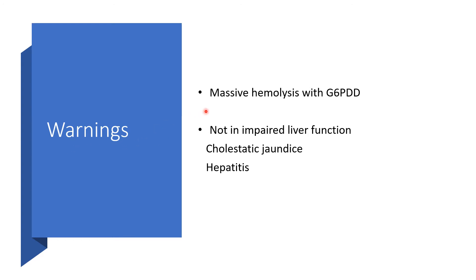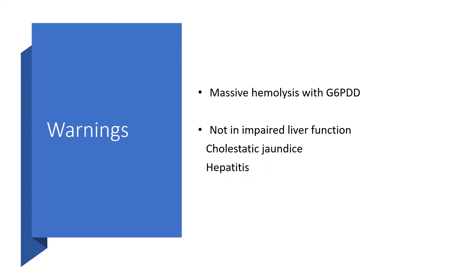Warnings: there may be massive hemolysis if we are not careful to rule out glucose-6-phosphate dehydrogenase (G6PD) deficiency before use. When there is impaired liver function, we will never use Dapsone. Also in cholestatic jaundice and hepatitis there may be a problem. There may be fatal hematological problems such as aplastic anemia, agranulocytosis, and pancytopenia.